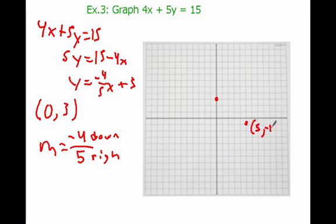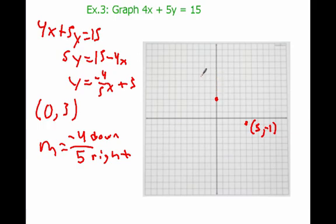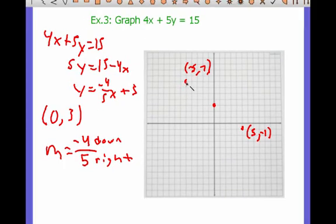I can also go the other way — 4 up and 5 to the left. Going 1, 2, 3, 4 up and 1, 2, 3, 4, 5 to the left gives me the point negative 5, 7. So all we did was put the equation in slope-intercept form, plot the point 0, 3, and use the slope to plot additional points — in this case two more. Now I draw the line connecting my points, and we have graphed our equation.